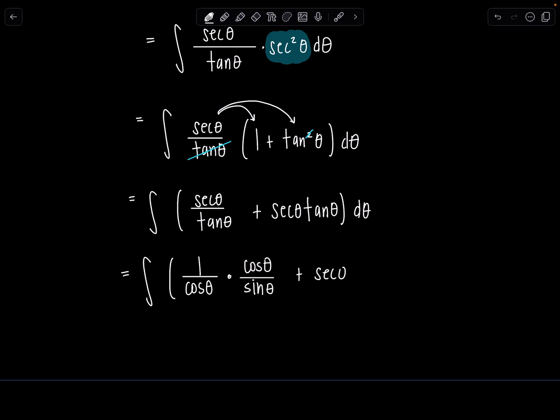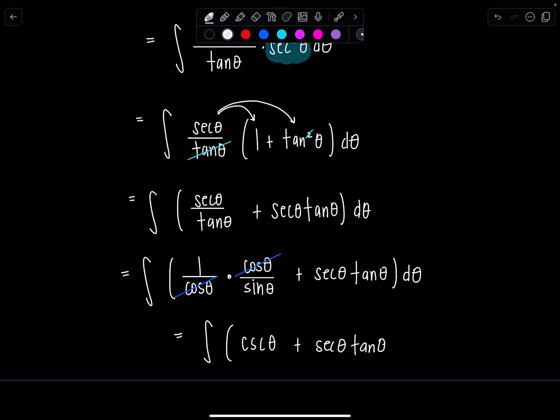Still have all this stuff. Don't stop writing the whole problem, okay? That's when you're going to derail yourself at some point. Cosine theta cancels. Now what do I have? Integral 1 over sine theta. That's cosecant theta plus secant theta tan theta d theta. Do you know the antiderivative of cosecant theta?